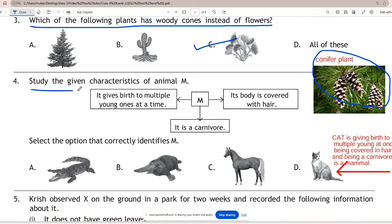Question 4: Study the given characteristics of animal M. It gives birth to multiple young ones at a time, it is a carnivore. Select the option that correctly identifies M. Correct answer is D - cat. Because cat is giving birth to multiple young at once, being covered in hair, and also a carnivore animal.